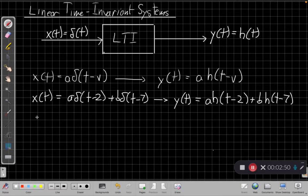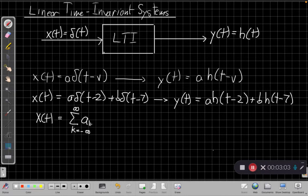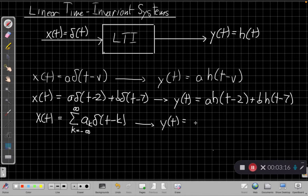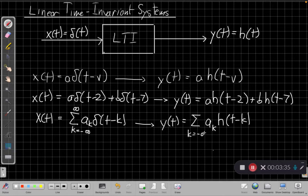If I went even further, what if my new input X of T was an infinite sum, not just a sum of two things, but say I sum over some infinite set of K's, A sub K delta of T minus K. The output would be the same. We could build it up one piece at a time. Each delta of T minus K would become an H of T minus K due to the time invariance. Scaling says we'd scale them all by the same constants, and superposition says we'd add them all up.